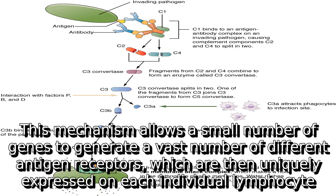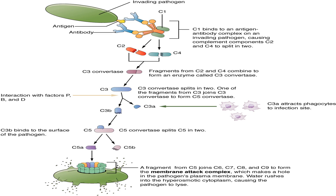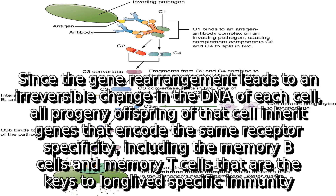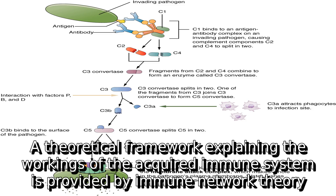This mechanism allows a small number of genes to generate a vast number of different antigen receptors, which are then uniquely expressed on each individual lymphocyte. Since the gene rearrangement leads to an irreversible change in the DNA of each cell, all progeny offspring of that cell inherit genes that encode the same receptor specificity, including the memory B cells and memory T cells that are the keys to long-lived specific immunity.